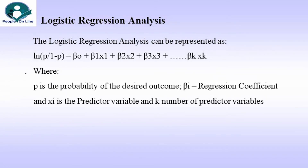The Logistic Regression Analysis can be presented as: ln(p / 1 − p) — which is called the Logit Value — = β₀ + β₁x₁ + β₂x₂ + β₃x₃ + ... + βₖxₖ, where p is the probability of the desired outcome, βᵢ is the regression coefficient, xᵢ is the predictor variable, and k is the number of predictor variables.